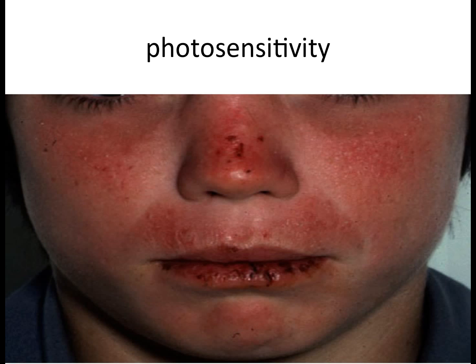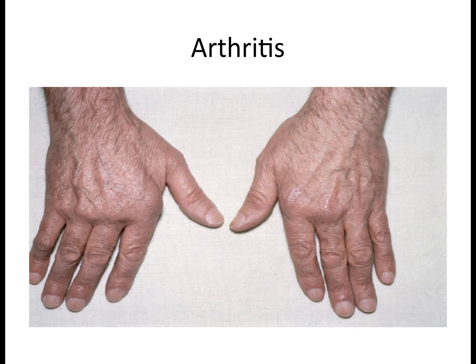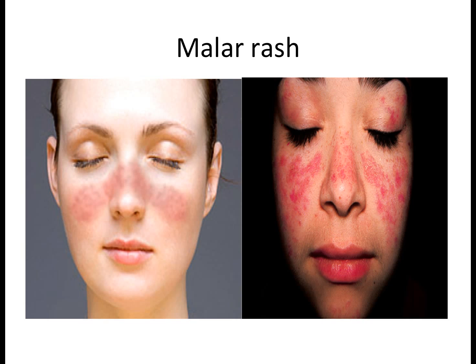Photosensitivity — sensitivity to light — connects back to one of the environmental triggers of SLE, causing more skin patches, ulcers, and scars, usually on the face. SLE can also induce arthritis, which is joint inflammation. This can affect any joint but is more specific to hands and wrists. Although there is excessive inflammation in the joints, it usually does not cause cartilage destruction, making it less severe than rheumatoid arthritis, which causes permanent cartilage damage.